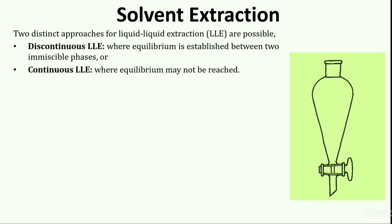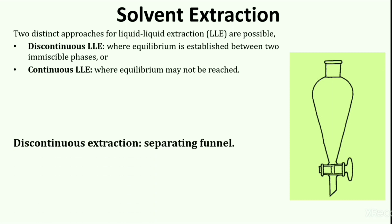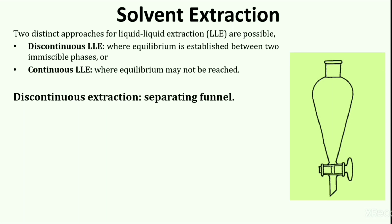There are two distinct approaches for liquid-liquid extraction. The first approach is discontinuous liquid-liquid extraction, in which equilibrium is established between two immiscible phases. In continuous liquid-liquid extraction, equilibrium may not be reached. In discontinuous extraction, the most common approach uses a separating funnel. In this diagram you can see a separating funnel with a stopcock knob and a glass stopper. The lower layer of solvent can be controlled by opening or closing the knob.